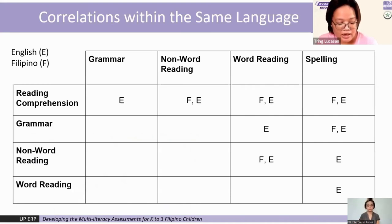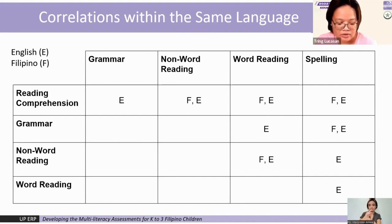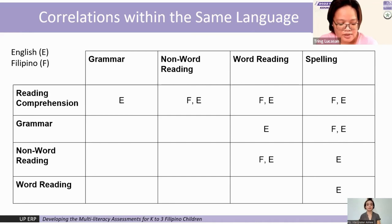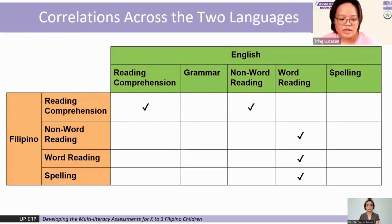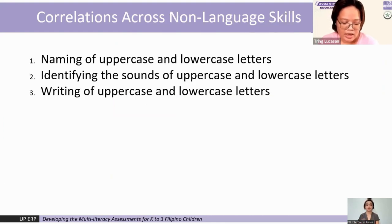Aside from the main objective of analyzing items, the data was also used to initially identify correlations across skills and languages. There were six strong positive correlations within Filipino, while there were nine strong positive correlations within English. Reading comprehension has the most number of correlations, indicating that the ability to read and spell also indicates the ability to read with comprehension, supporting the literature mentioned earlier. Across the two languages, reading comprehension and word reading are highly correlated, as well as word reading and non-word reading and spelling. There were also non-language skills with high positive correlations.